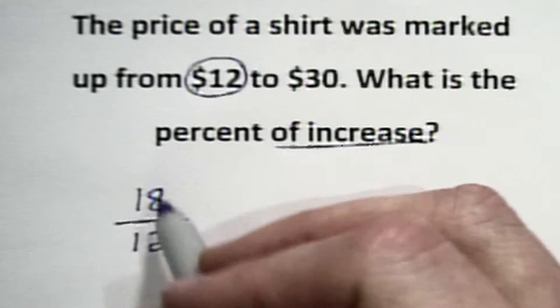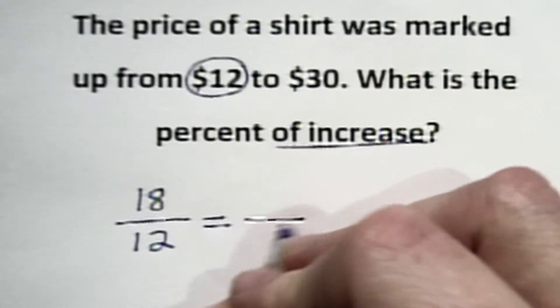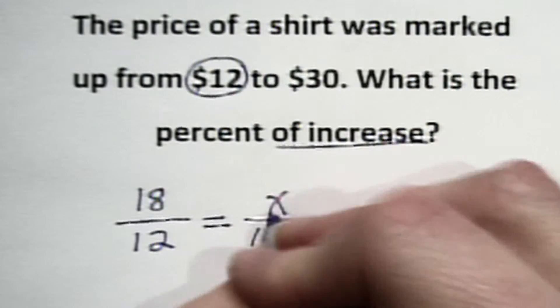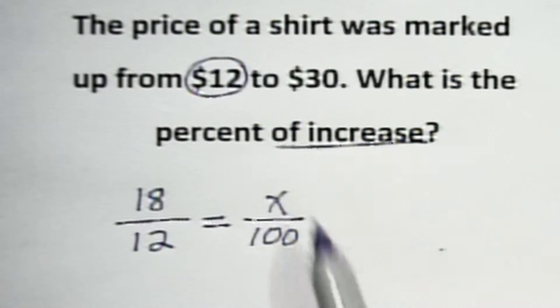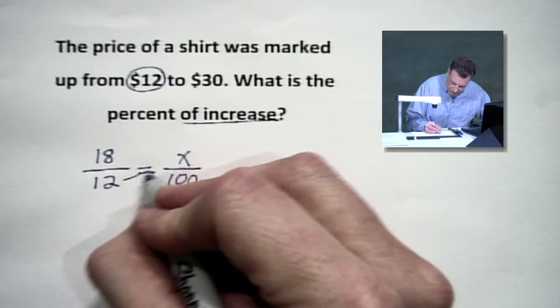So this time we've got 18 over 12. Let's kick along here. Now we can definitely get the percent over 100. That's never going to fail you. You're always going to be looking for the percent over 100. And let's check it out. Cross-multiplying.